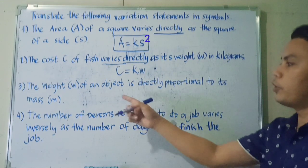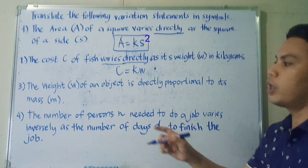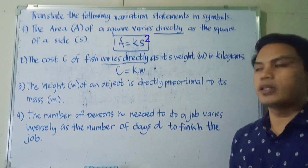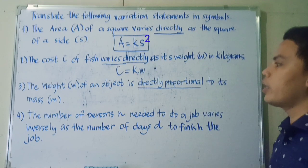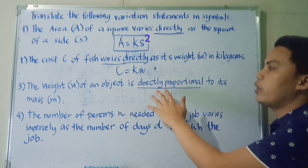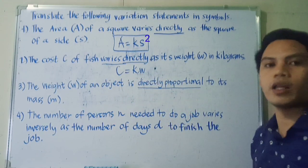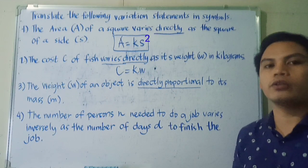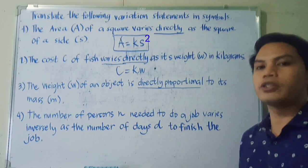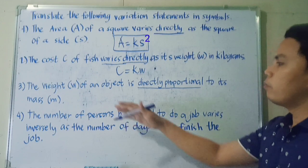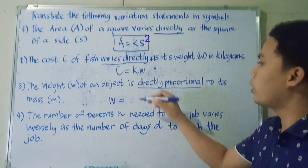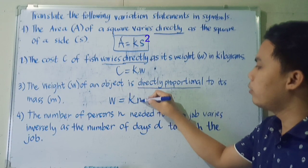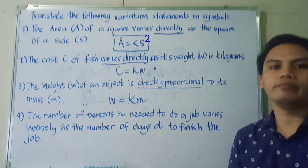Next, the weight W of an object is directly proportional to its mass M. So the keyword is directly proportional. So you can have varies directly or directly proportional. They're the same. This still means direct variation. So our mathematical symbol would be W equals K and M.